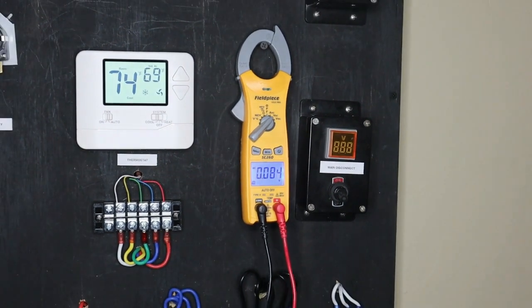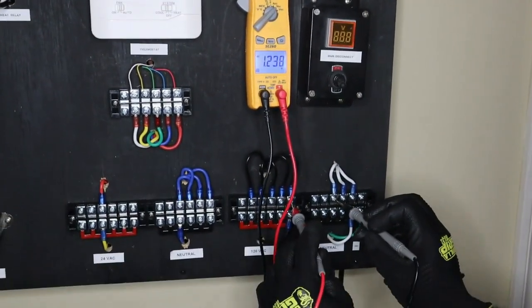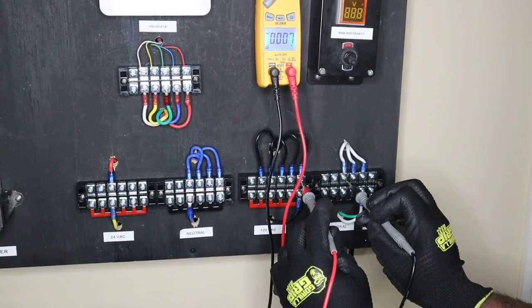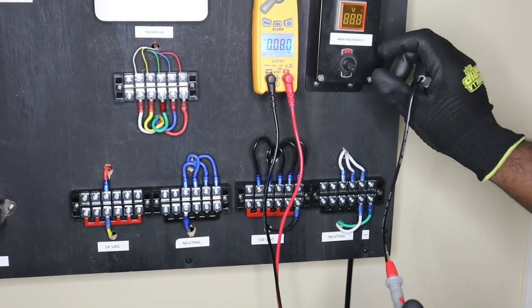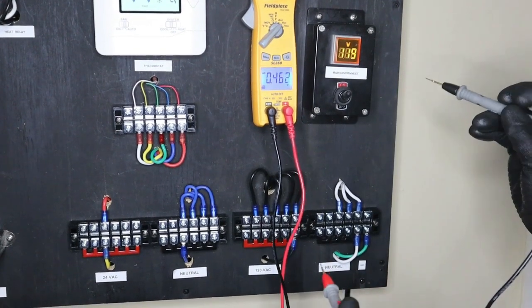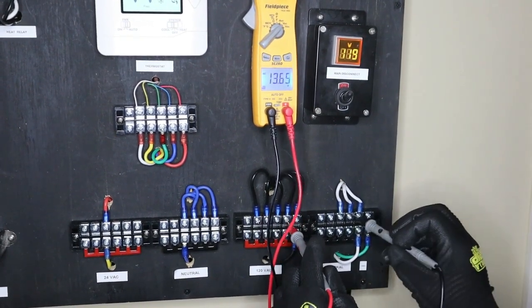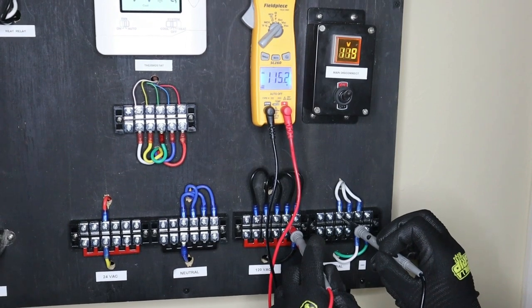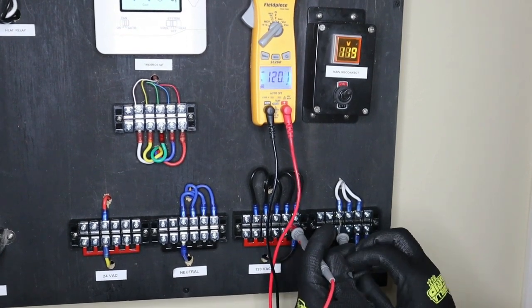So if I should go across the hot and neutral I'm reading zero volts. When I hit the toggle switch the system is now energized and if you check I have 120 volts.